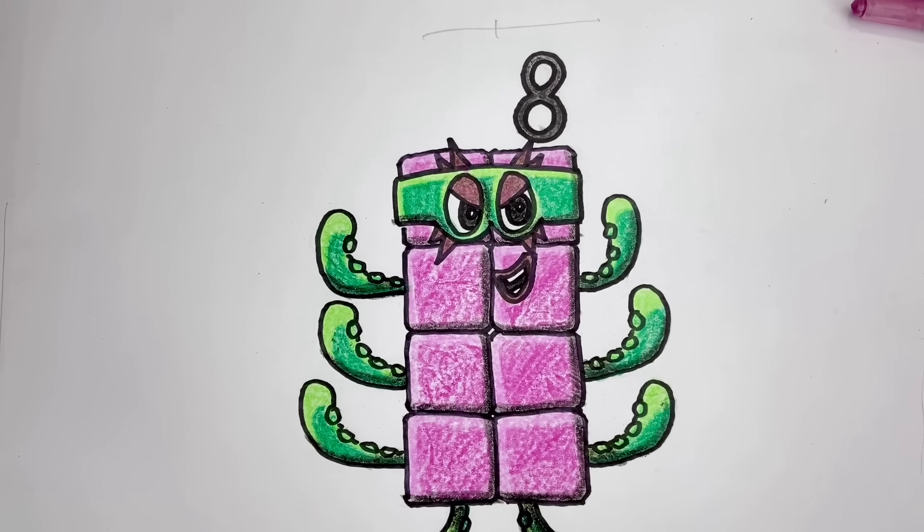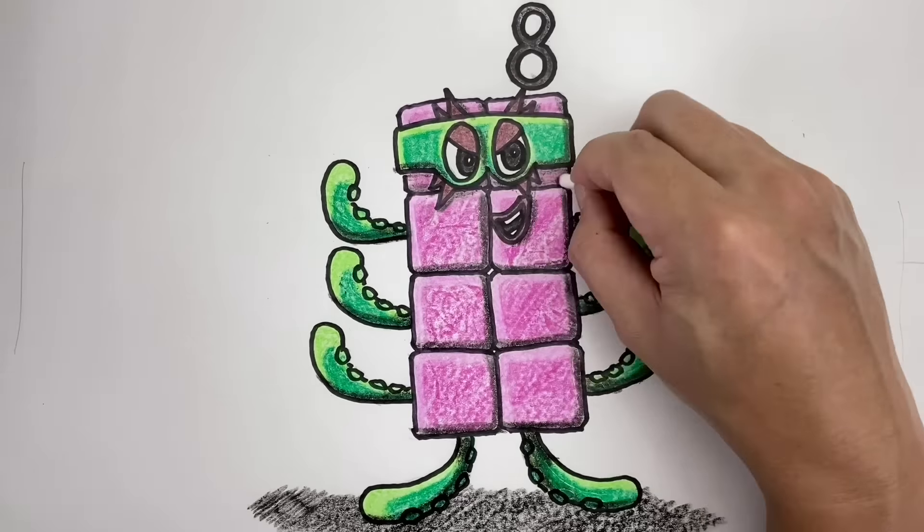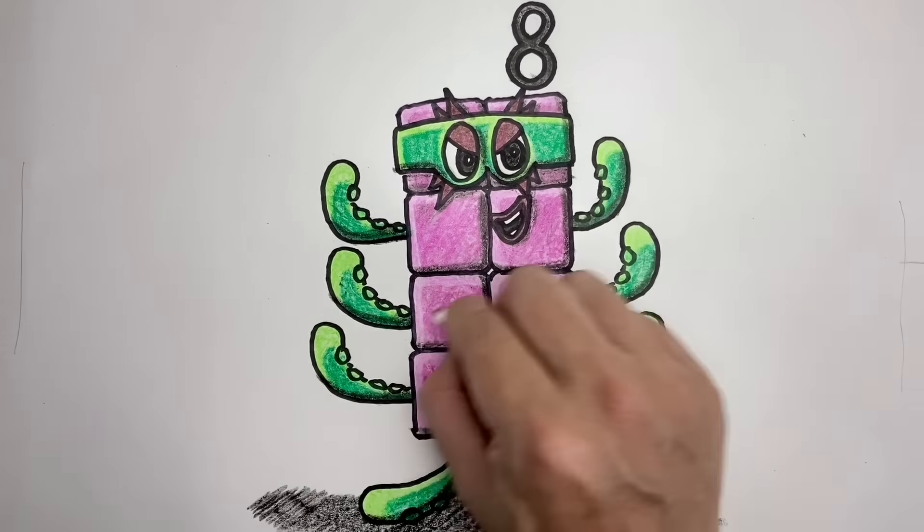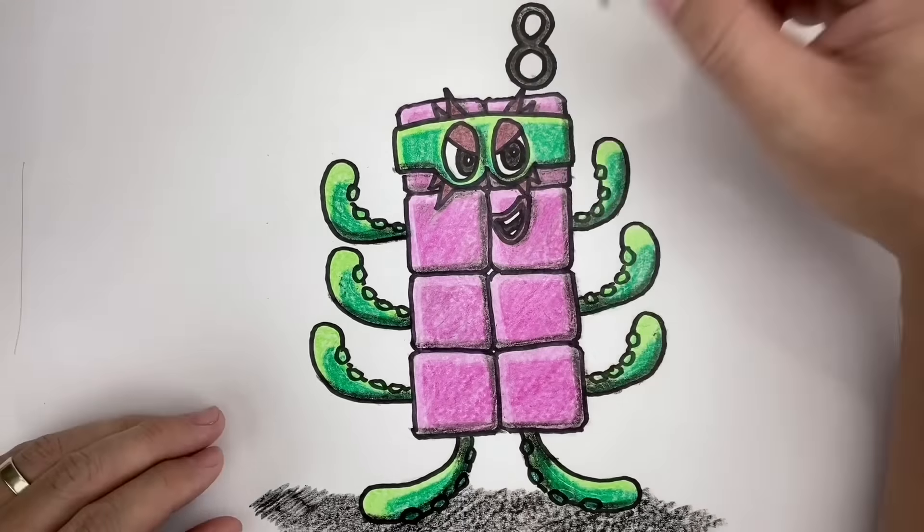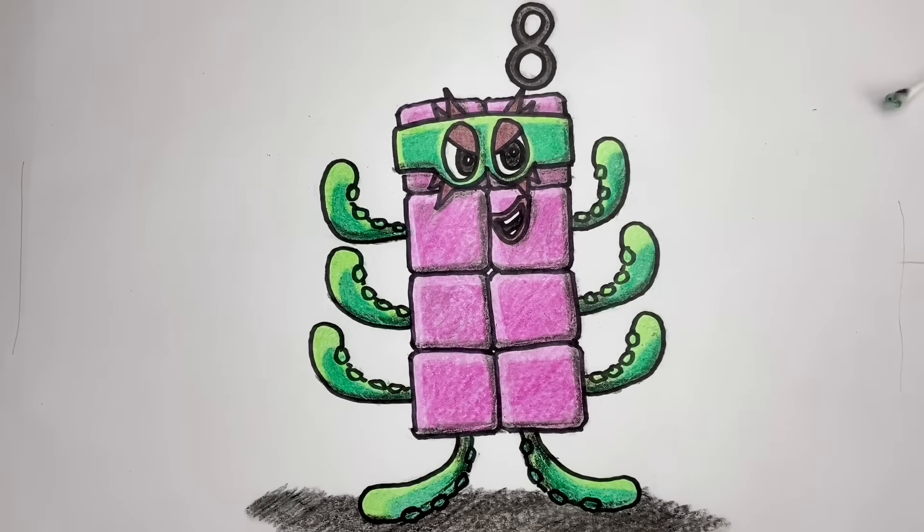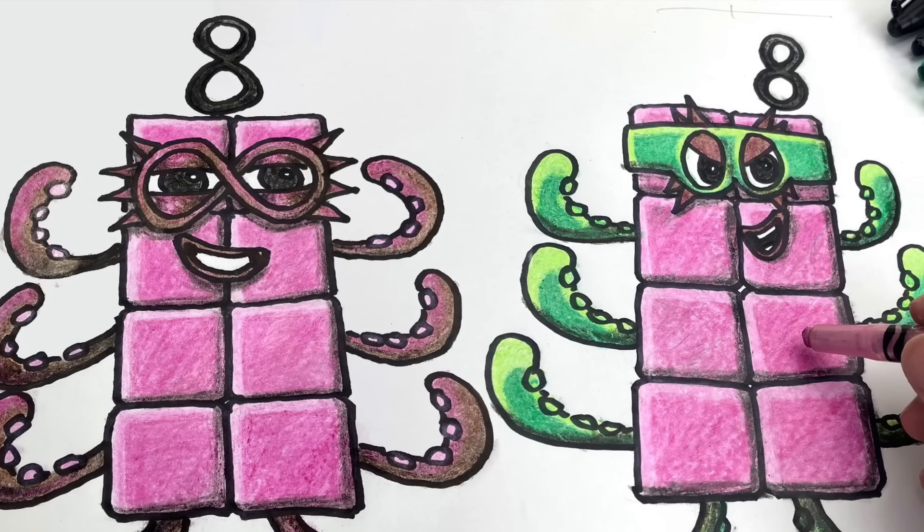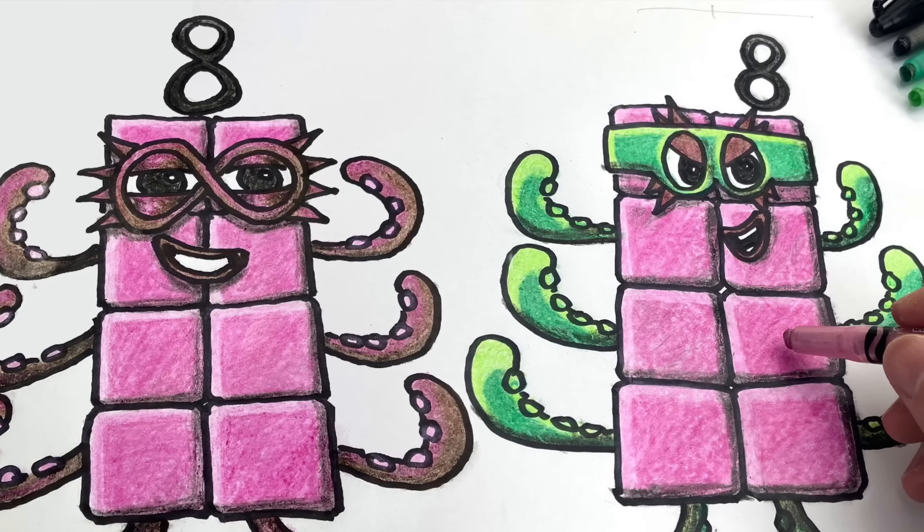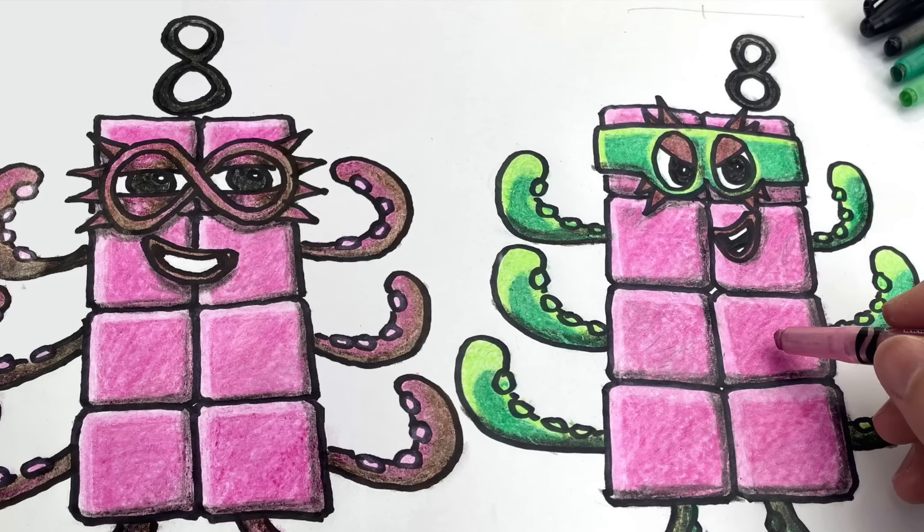Once done, you can already stop here or you can proceed to blending and smoothening out the colors with the use of a cotton bud. Just rub the tip over the colors to blend and smoothen them out. And there you have it! It's Octonaughty! So which side are you on? If you liked this video, hit the thumbs up icon and remember to subscribe! Thanks for watching! Bye!